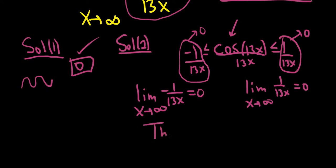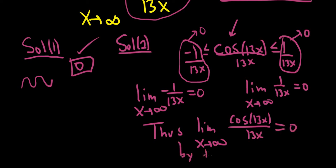So thus, the limit as x approaches infinity of the cosine of 13x over 13x is equal to 0 by the squeeze theorem. It's also called the sandwich theorem or the pinching theorem. I don't like those names. I like calling it squeeze.